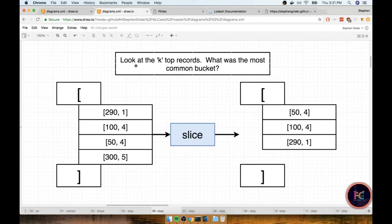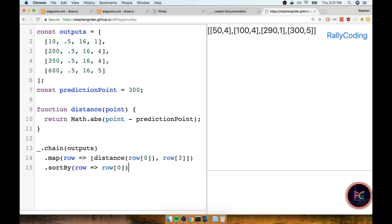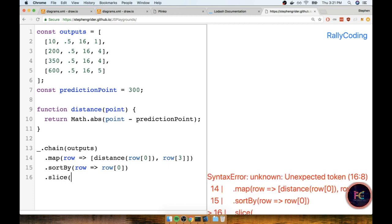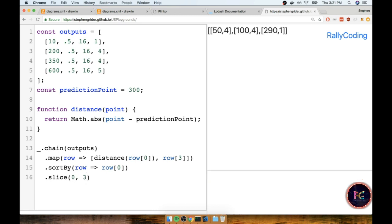Now the next step is to look at the top k records. Remember, k is a positive integer - it's the number of top records we want to consider for saying this new prediction we're trying to make is going to be very similar to these top k records. To pull out these top k records, we're going to use the Lodash slice method. Slice just takes some number of elements out of an array and returns just those elements. I'll add on a .slice, and I want to take everything from the first record up to the first three records.